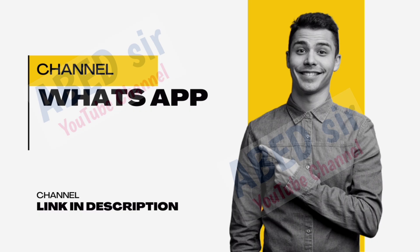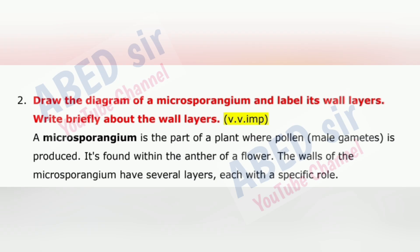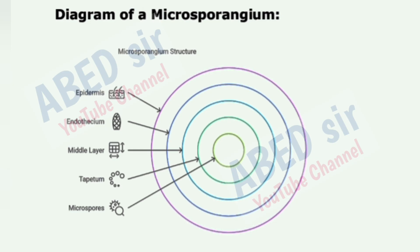Next important long question is 2: Draw the diagram of a microsporangium and label its wall layers. Write briefly about the wall layers. A microsporangium is the part of a plant where pollen, male gametes, is produced. It is found within the anther of a flower. The walls of the microsporangium have several layers, each with a specific role.